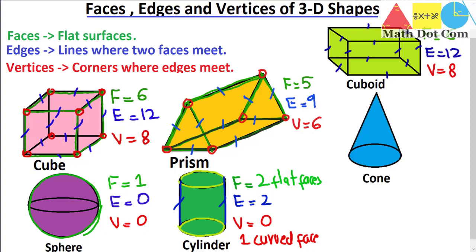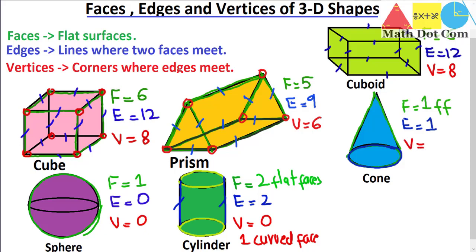The next three-dimensional figure is the cone. In the cone we have one flat face and one curved surface — similar to the cylinder. We are concerned with the flat face, so F equals one. There is only one edge where the flat face meets the curved surface. And a cone has only one vertex at its tip. When it's one, we call it a vertex; when it's more than one, we call them vertices.